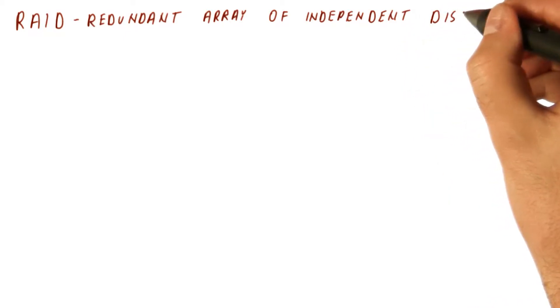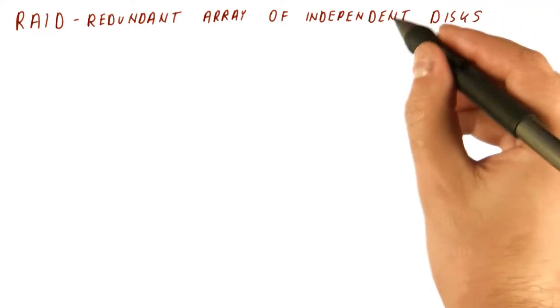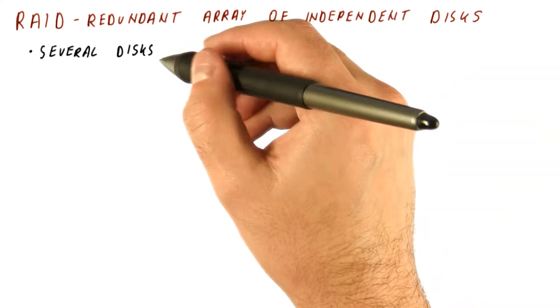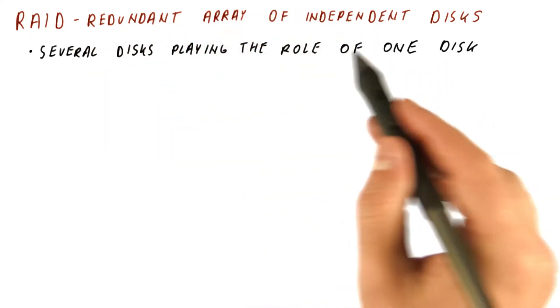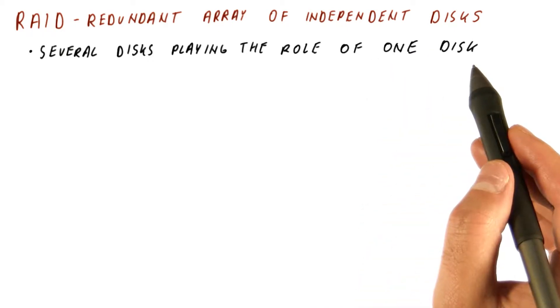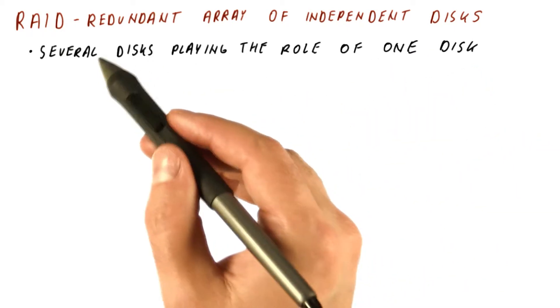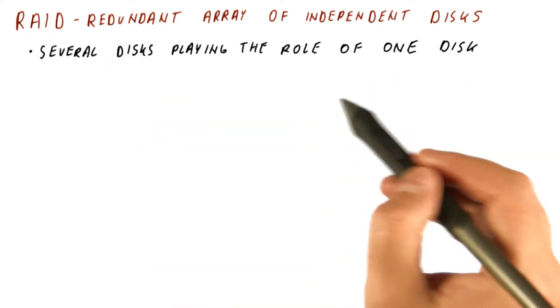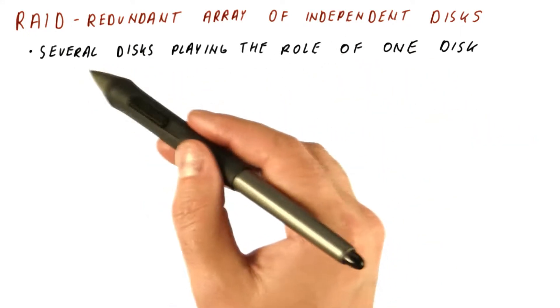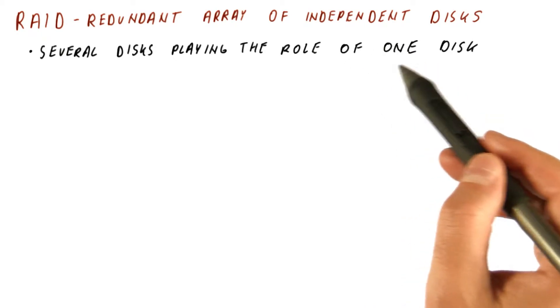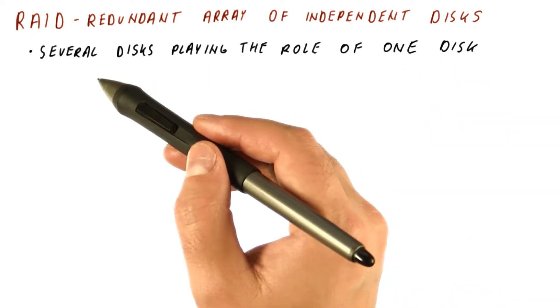RAID stands for redundant array of independent disks. Effectively, with RAID we have several disks that play the role of only one disk in different ways. They can either pretend to be a larger disk, or they can pretend to be a more reliable disk, or they can pretend to be a disk that is both larger and more reliable than any one of the disks.